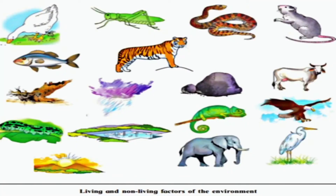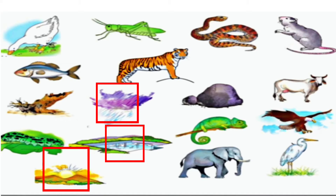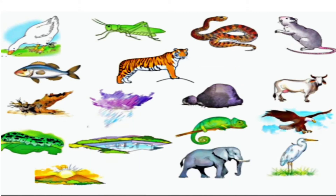Now let's look at this picture — living and non-living factors of the environment. In this picture we are going to find out how living things and non-living things depend on each other. The sun, lake, rain, dry tree trunk and stone are the non-living things. And all others are the living things: duck, grasshopper, snake, rat, tiger, fish, chameleon, eagle, elephant and crane.